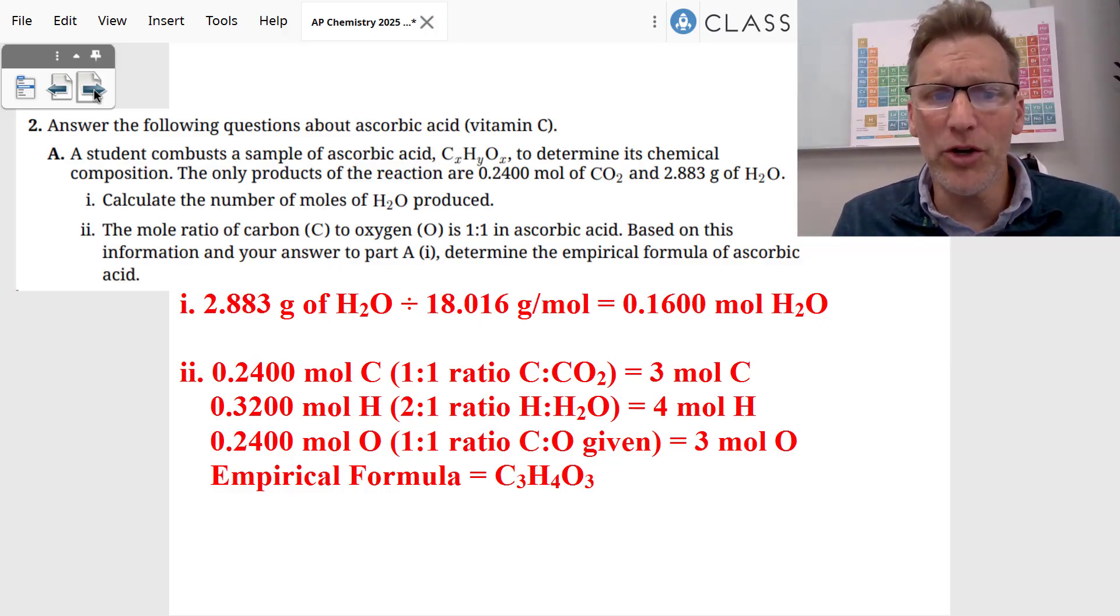We look at the ratio here, 24 to 32 to 24. That's a 3 to 4 to 3 ratio. Given our empirical formula of C3H4O3, you could divide by the smallest one and get a whole number ratio, but you can see it's a 3 to 4 to 3 ratio.